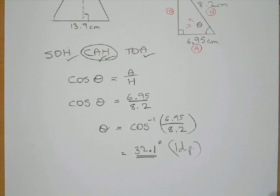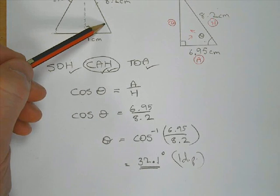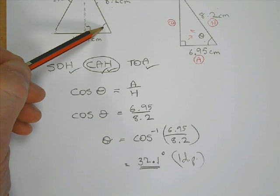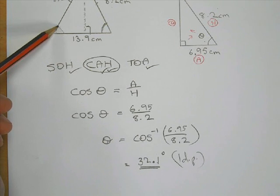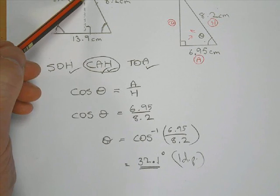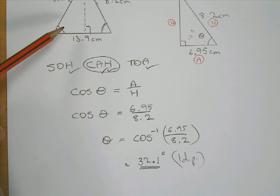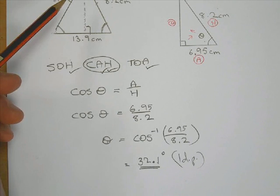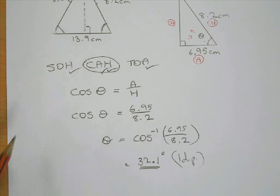So that is how you work out one of the angles in this triangle. We have worked out this angle here, 32.1. And with that information, we should be able to work out this angle over here, because it's an isosceles triangle. And also we can work out this angle up here, because angles in a triangle add up to 180. So you don't need to do any more trigonometry. Once you've worked out one angle, you can work out the other ones just by using properties of a triangle.